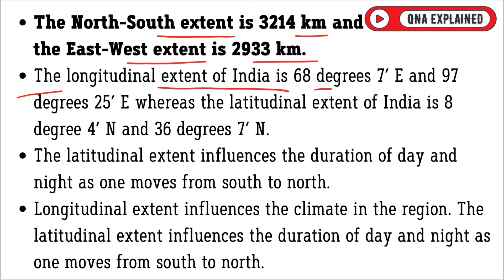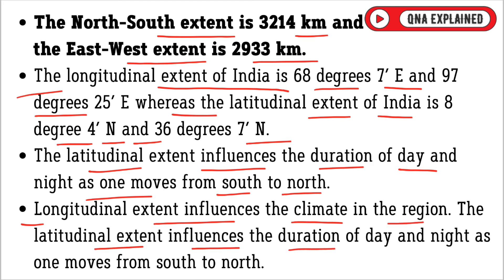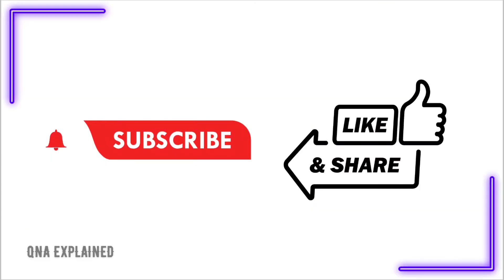The longitudinal extent of India is 68 degrees 7 minutes east to 97 degrees 25 minutes east, whereas the latitudinal extent is 8 degrees 4 minutes north to 36 degrees 7 minutes north. The latitudinal extent influences the duration of day and night as one moves from south to north, while the longitudinal extent influences the climate in the region.